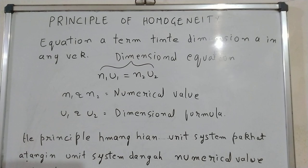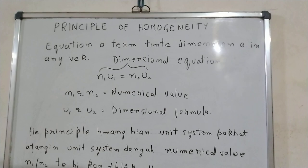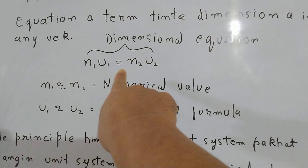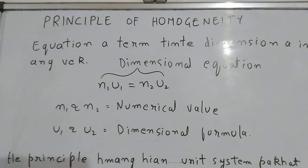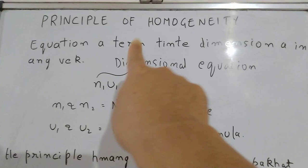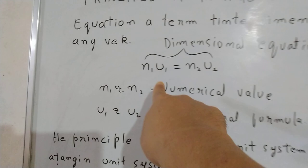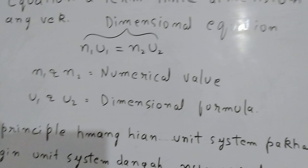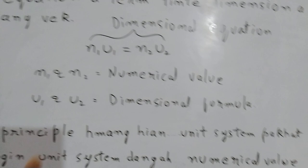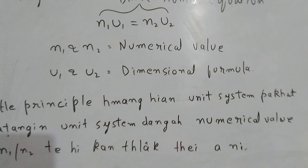Dimensional Analysis by Principle of Homogeneity. The Principle of Homogeneity states that in a dimensional equation, the left hand side and the right hand side must have the same dimensions. This is the principle of homogeneity — the numerical value and the dimensional formula must match on both sides.